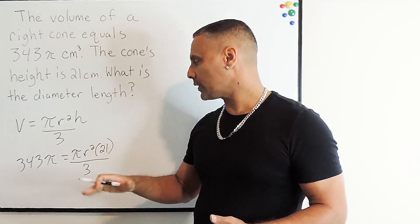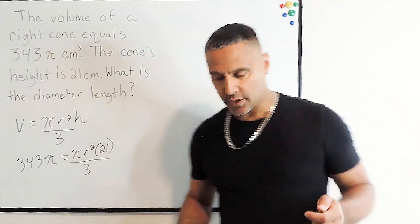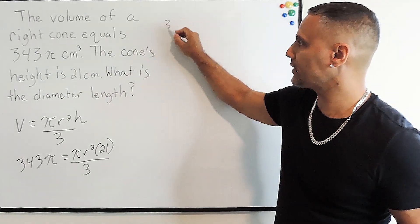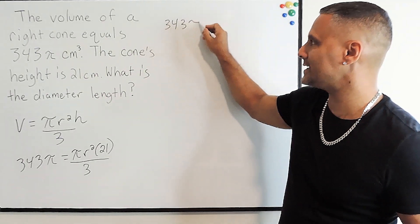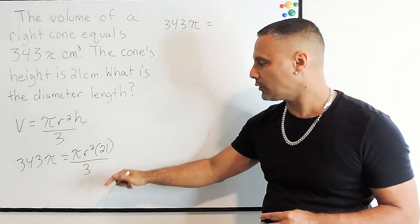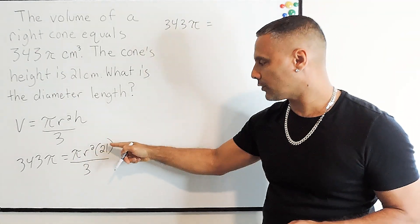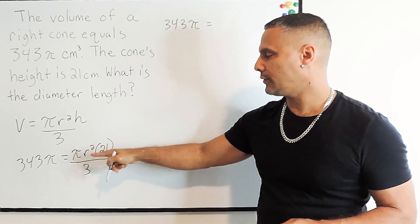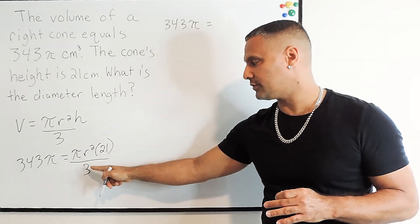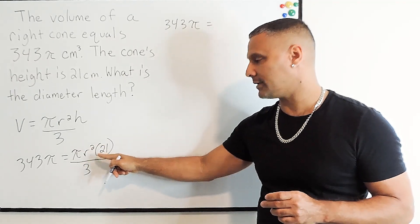The next step is we're going to simplify this equation a bit. We're going to write 343π, which is the left-hand side of our equation. On the right-hand side, notice we have a 21 on the numerator and a 3 on the bottom. So we're going to simplify just that piece. We're going to take 21 and divide it by 3, which is 7.